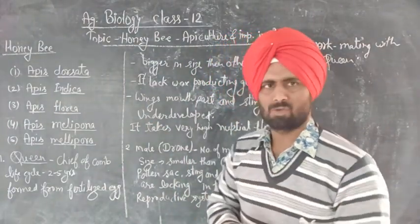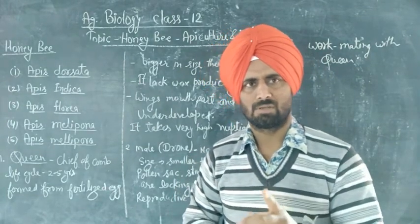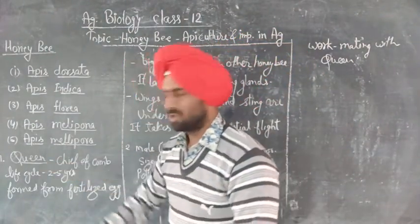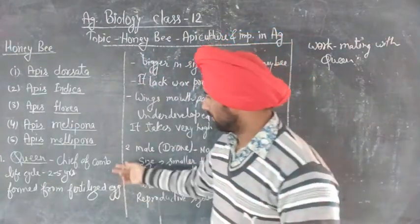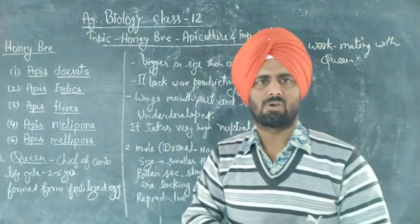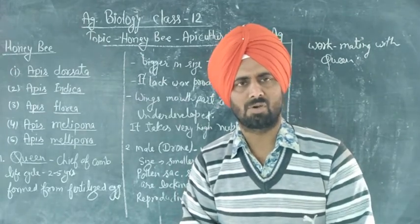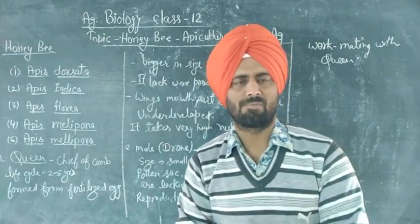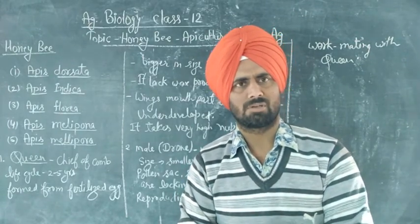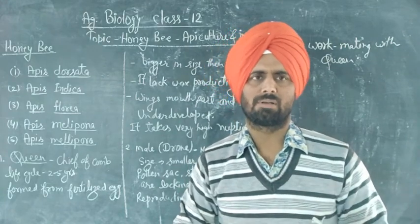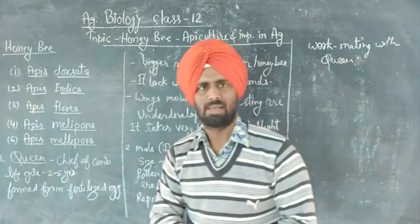In the honeybee comb there are three types of honeybees. First is the Queen. The queen is the chief of the comb and controls the entire comb by excretion of a special type of odor, which controls all the honeybees of the comb.